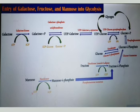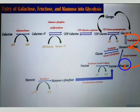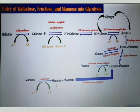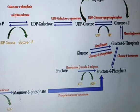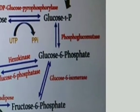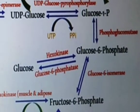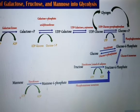Now our steps are entering into the glycolytic pathway. Glucose-1-phosphate will be converted into glucose-6-phosphate, and glucose-6-phosphate is converted into fructose-6-phosphate. The enzyme required for the conversion of glucose-1-phosphate into glucose-6-phosphate is phosphoglucomutase. Then glucose-6-phosphate is converted into fructose-6-phosphate.